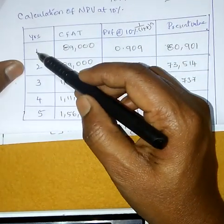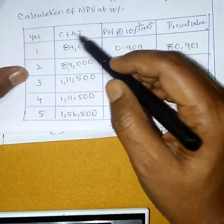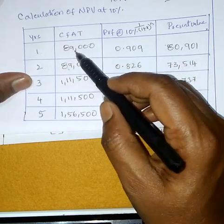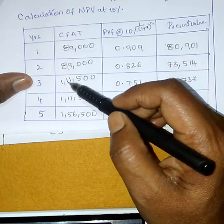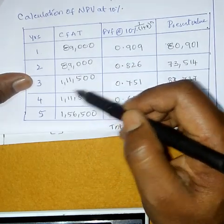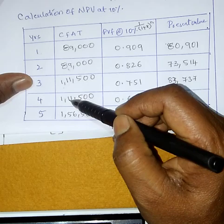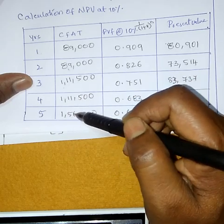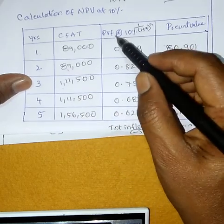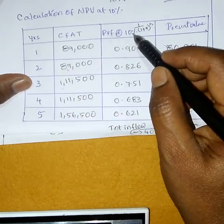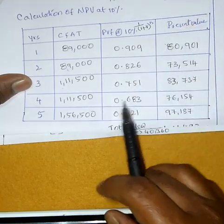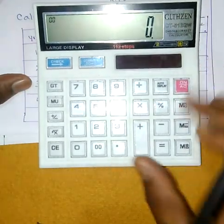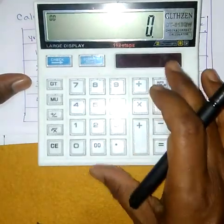Number of years 1, 2, 3, 4, 5. CFT cash inflow: 89,000; 89,000; 1,11,500; 1,11,500; 1,56,500. PV Factor 10% ke yala calculate cheyali PV Factor ante.